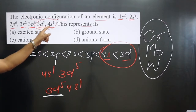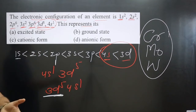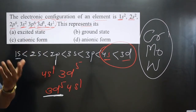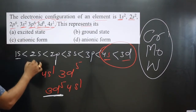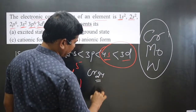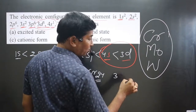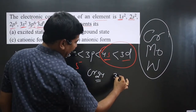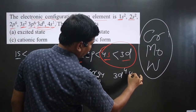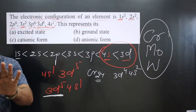The shell number represents the principal quantum number, which tells us the period. From this we can determine the element. For chromium, the atomic number is 24. The outermost electronic configuration is supposed to be 3d4 and 4s2 according to the Aufbau principle.